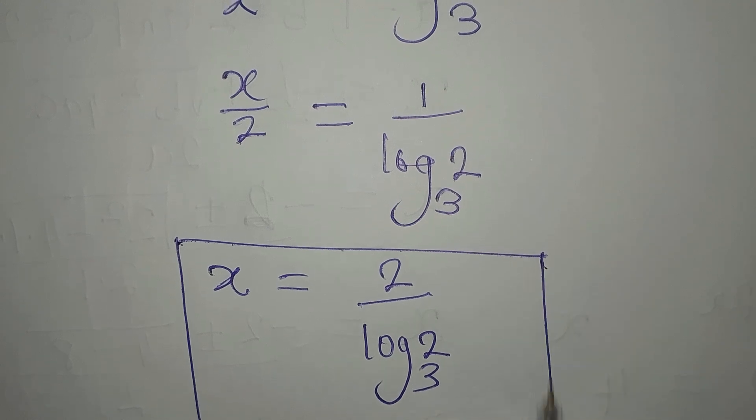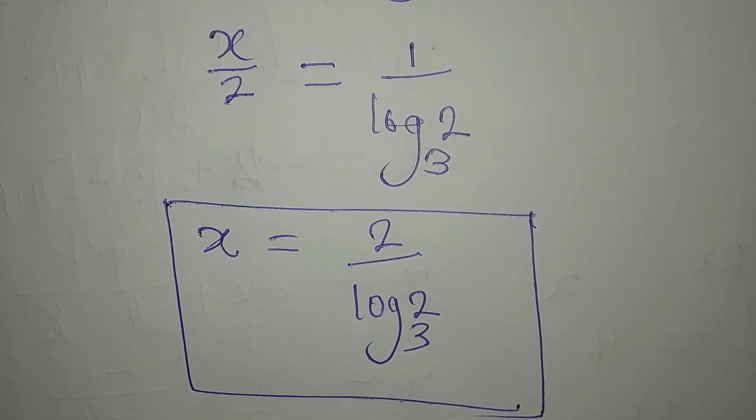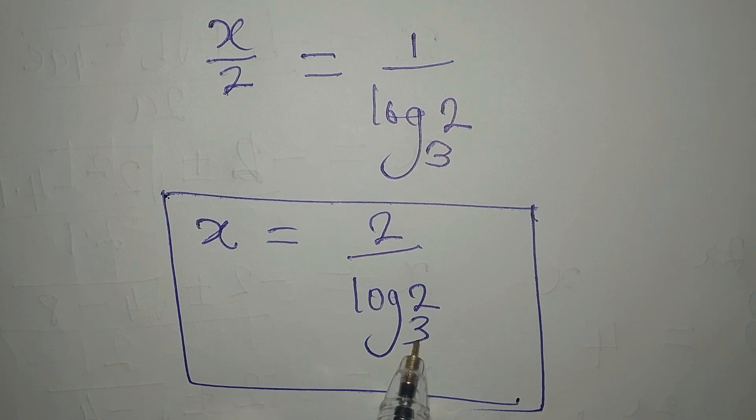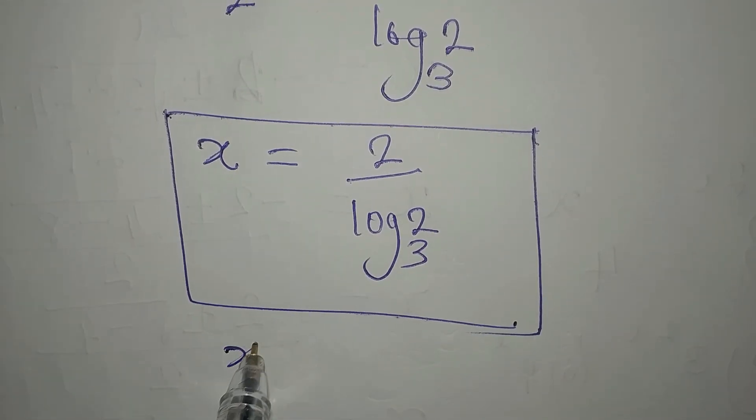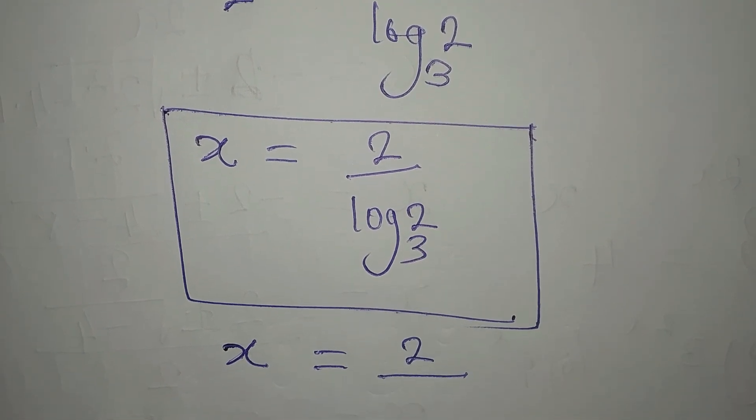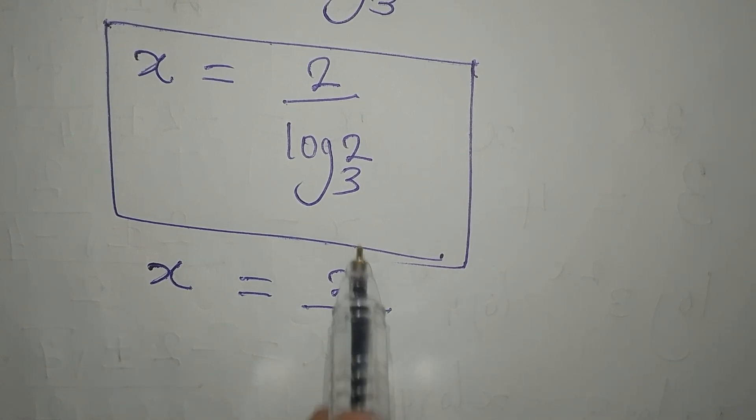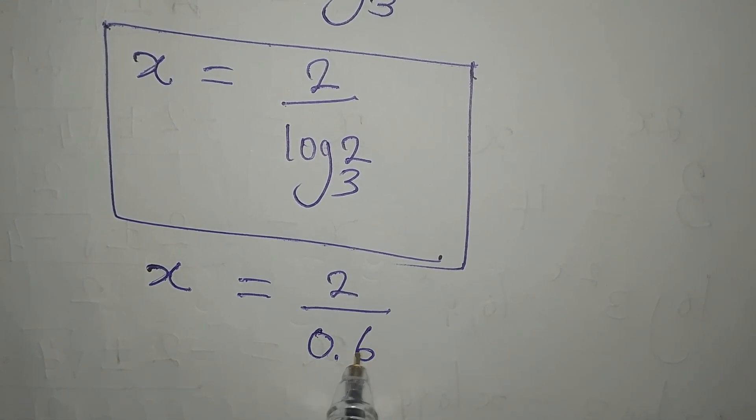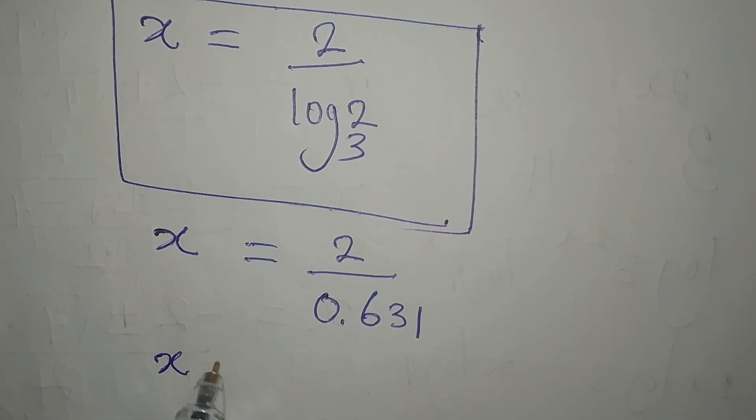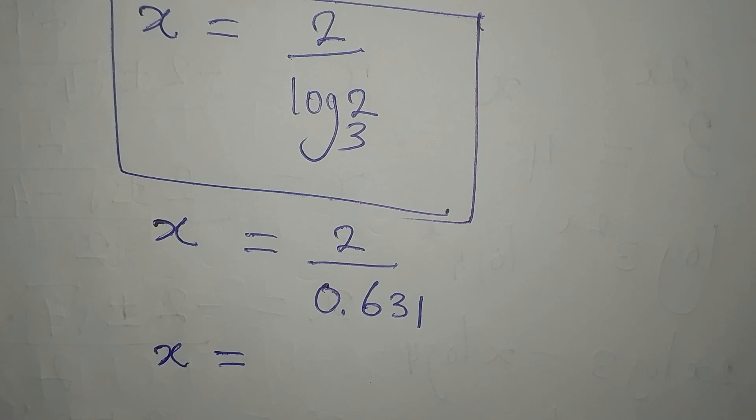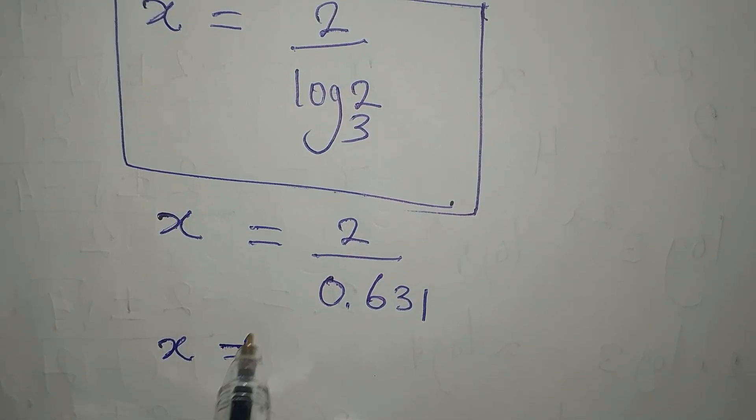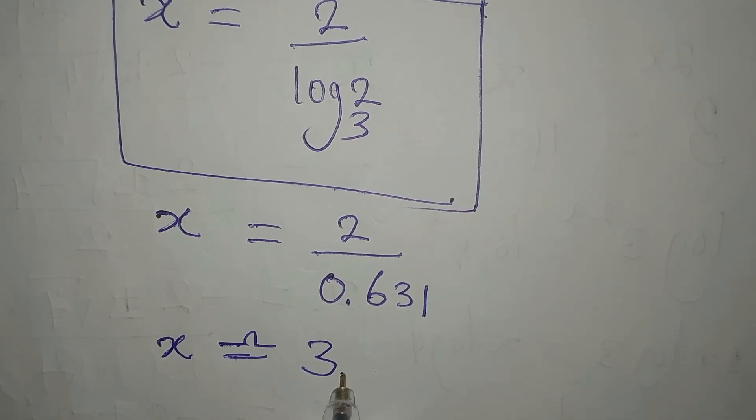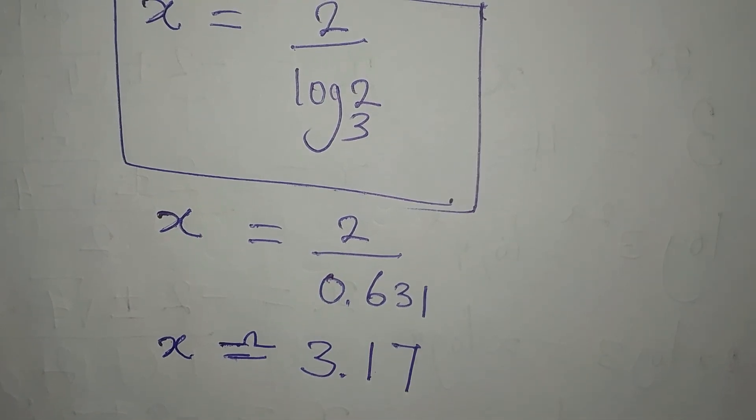If you want to have your answer in decimal form, you can equally work on this and write this in decimal. Log 2 to base 3 is 0.631, so our x will be 2 divided by 0.631. This will approximately give us, from calculator, 3.17. So this is the value of x that is satisfying the equation.